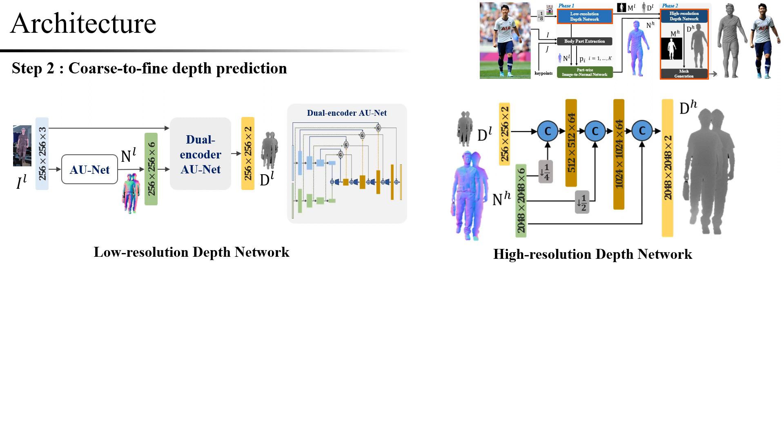After that, we refine the depth map similar to the super-resolution method by using a high-resolution normal map in a cascade manner. This method has the advantage of using very few network parameters and memory. We convert the high-resolution depth map into a point cloud and obtain the final mesh through Poisson reconstruction.